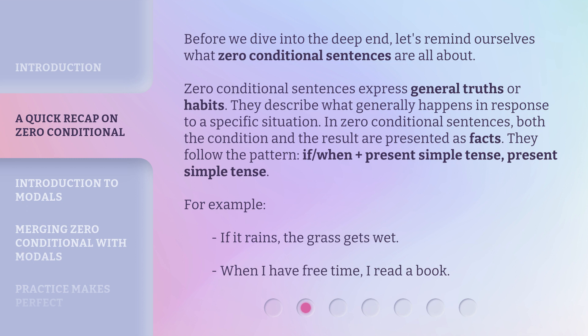Before we dive into the deep end, let's remind ourselves what zero conditional sentences are all about. Zero conditional sentences express general truths or habits. They describe what generally happens in response to a specific situation. Both the condition and the result are presented as facts. They follow the pattern: if or when plus present simple tense, present simple tense. For example, if it rains, the grass gets wet. When I have free time, I read a book.